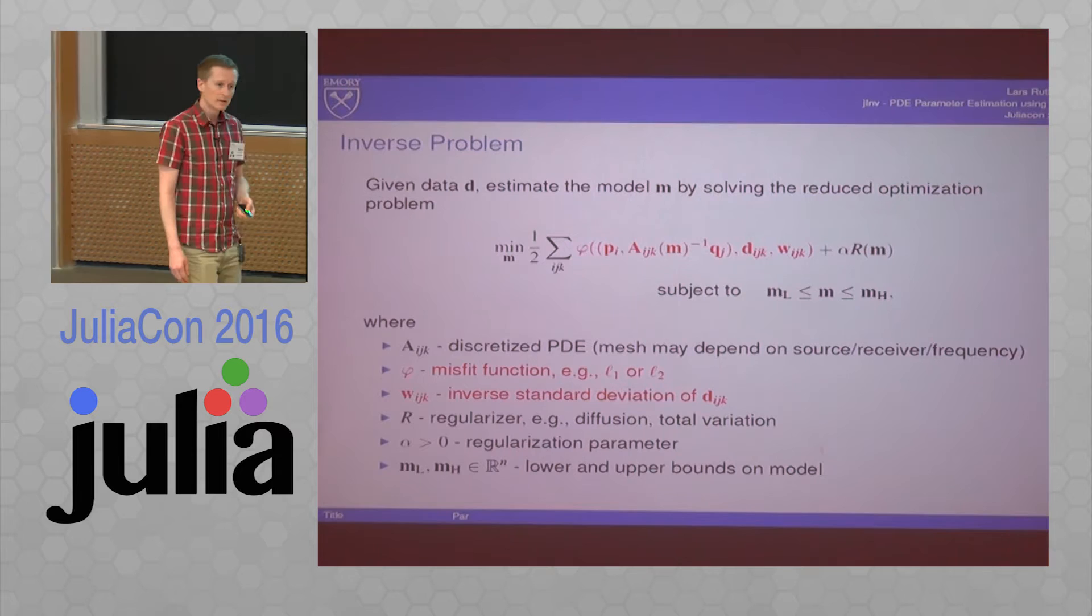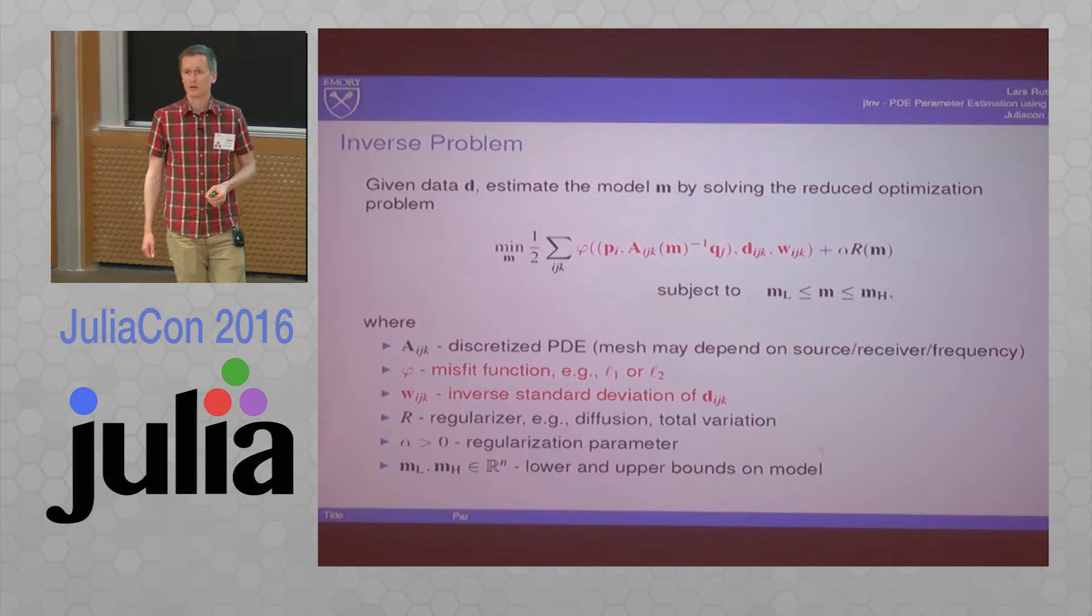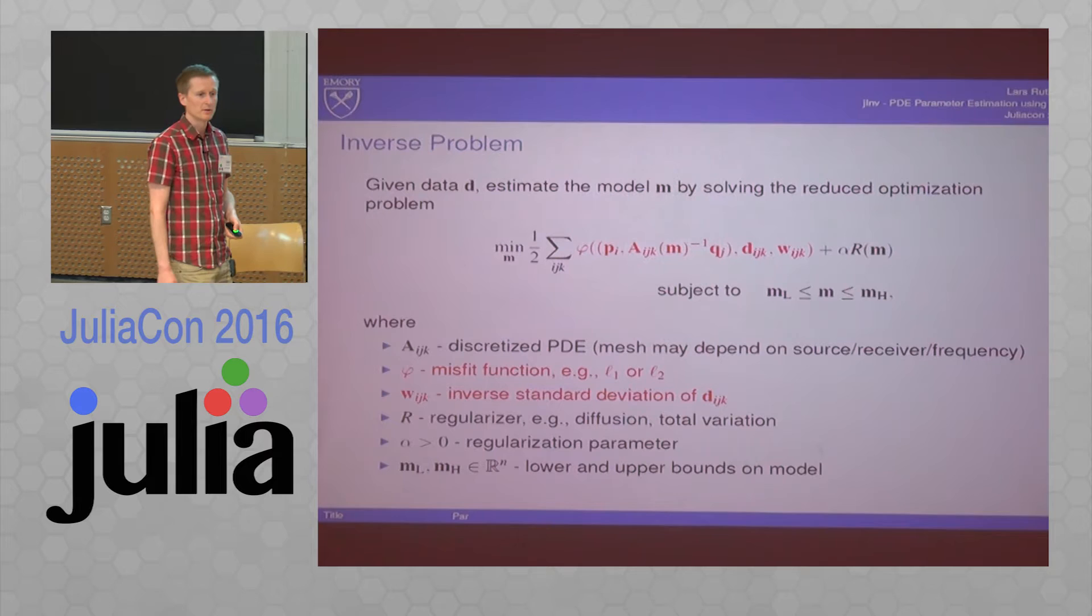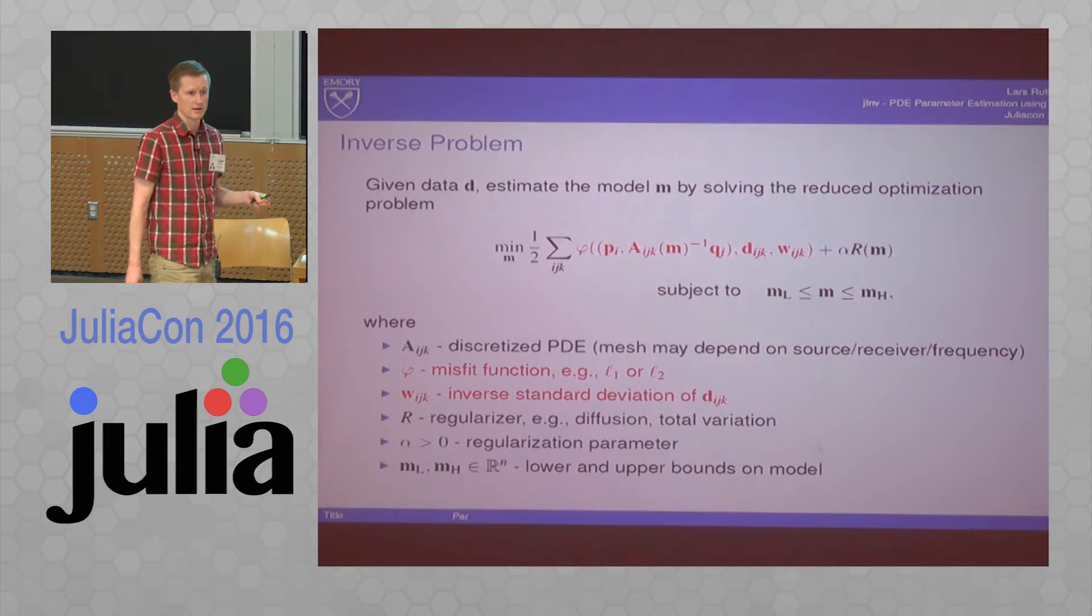It's not so embarrassingly parallel, because at some point in your optimization, you also want to take derivatives. And we like to use Hessian-based methods. So we want to do matrix vector products with the Hessian. Each of those guys is going to have a product with the inverse of the Hessian in them, of the PDE in them.